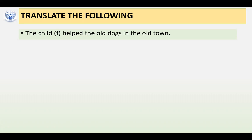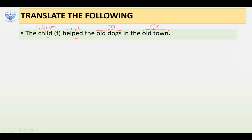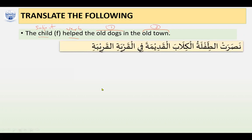There are two noun-adjective constructions in this sentence. The first is 'old dogs' and the second is 'old town.' The verb in this sentence is 'helped.' Who did the action? The child. And which child? A feminine child. So this is the subject. The child helped the old dogs in the old town. Let's look at the answer for it and analyze it further.